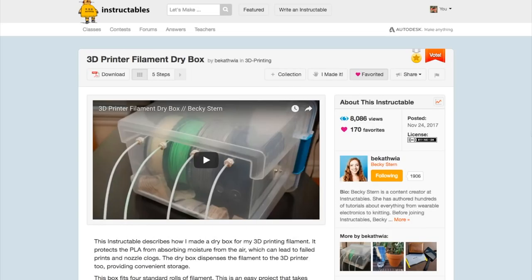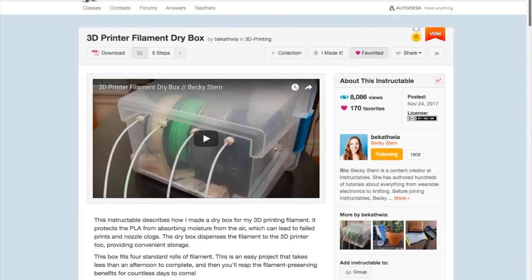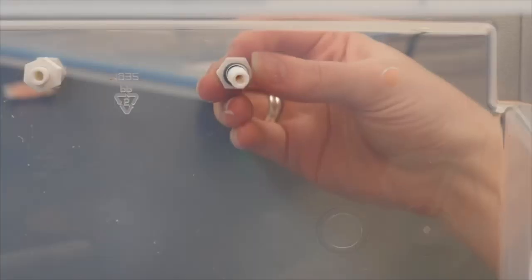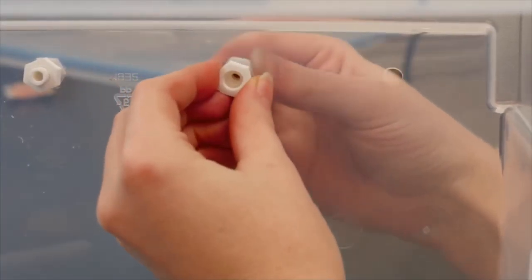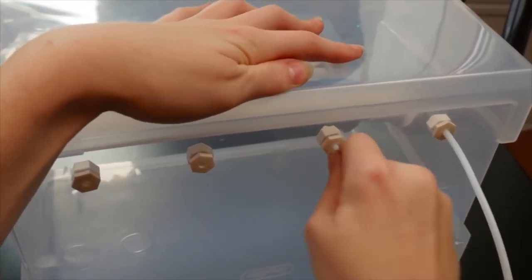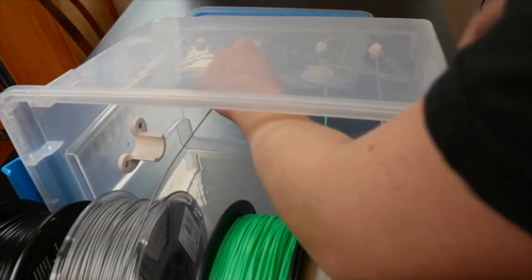I have a few more tips to share with you. On Instructables, Becky Stern has her own take on making a 3D printer filament dry box using a gasketed plastic bin, Teflon tubing, and these 3D printed filament feeders from Steve Reising. It's a step up from the Ziploc bag technique.